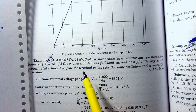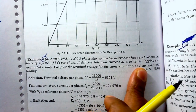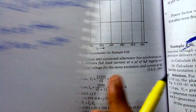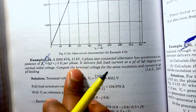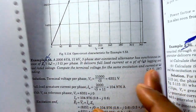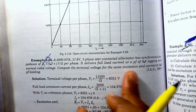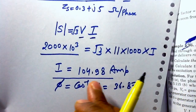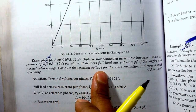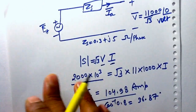In the next part of the question, we have to keep the excitation the same and keep the current the same. The magnitude of the current calculated here, 104.98 A, will be the same for the next part where we calculate the terminal voltage at 0.8 power factor leading. The EMF value we calculate here will also be used for computing the terminal voltage.